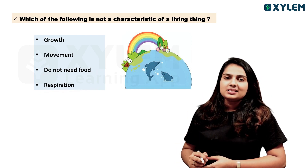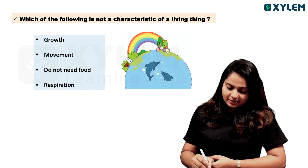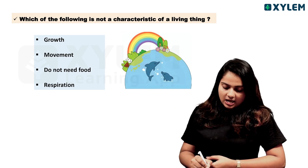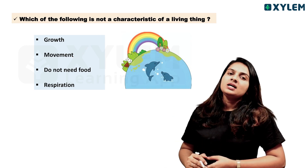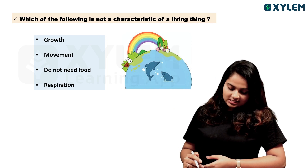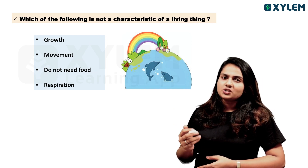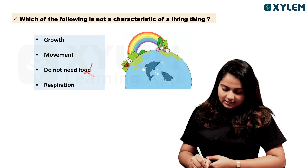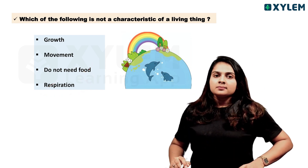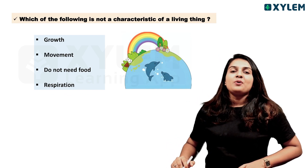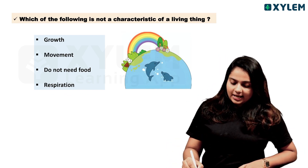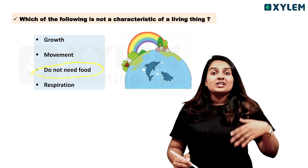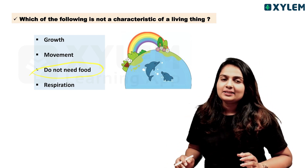What are the characteristics of a living organism? Living organisms need food, show growth, movement, and respiration. So 'do not need food' is NOT a characteristic of a living thing. This is a simple item we should have seen.